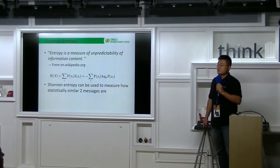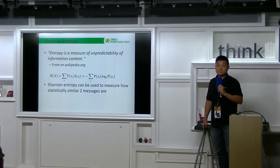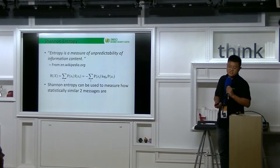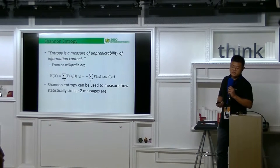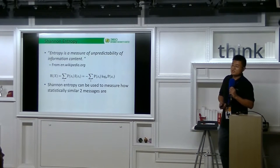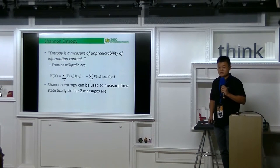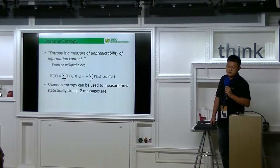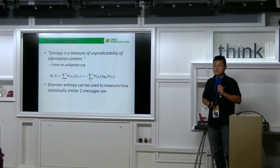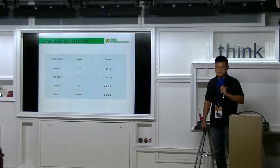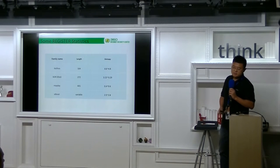There is a term in information theory called channel entropy. The wiki says entropy is a measurement of unpredictability of information content. Its value is calculated by this formula. And channel entropy can be used to measure how statistically similar two messages are. When used in register messages, the small case XI stands for the unique message byte.